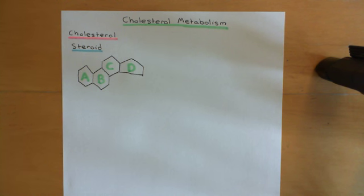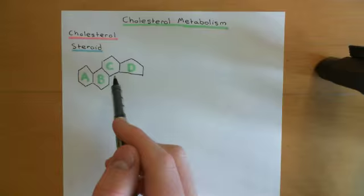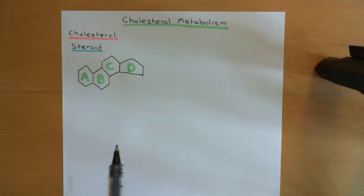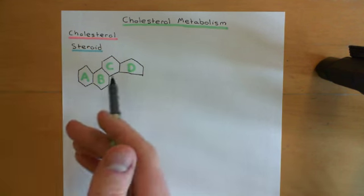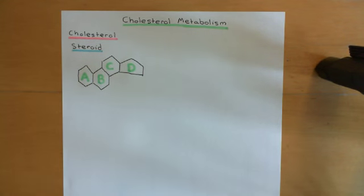All steroid molecules — all molecules that are considered steroids — will contain something similar to this. They'll contain these four rings. They'll have modifications to it though — they might have a few double bonds here and there, and certainly a lot of other things attached off the carbon atoms, but this is the basic starting point if you want to build a steroid molecule.